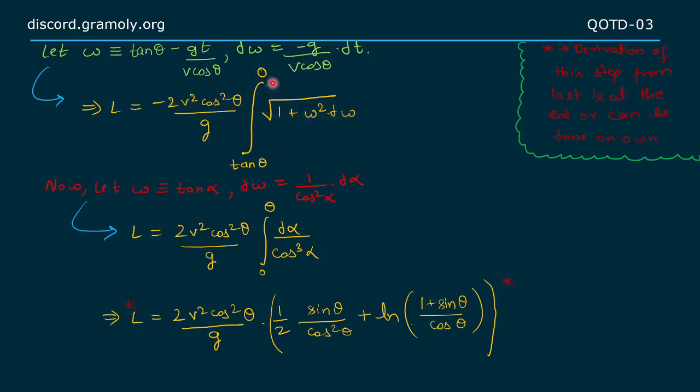Making a final substitution, letting w as tan α, we get dw as 1 upon cos² α times dα. Using this, we get the length of trajectory as 2v² cos² θ upon g times integration of dα upon cos³ α from limits 0 to θ.